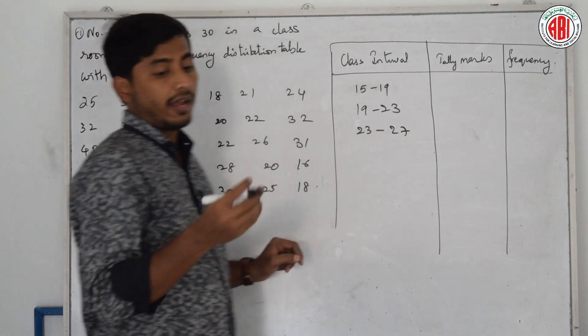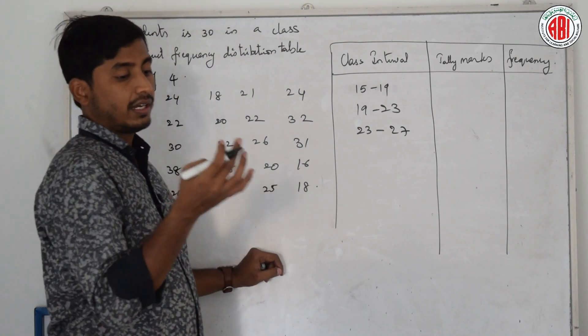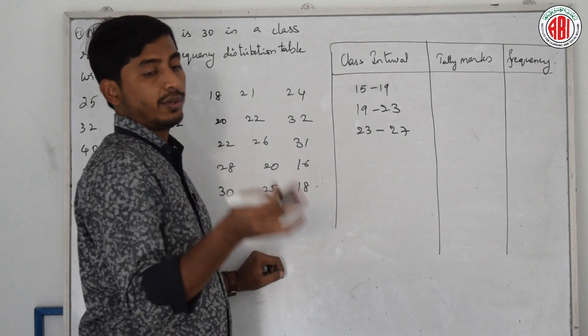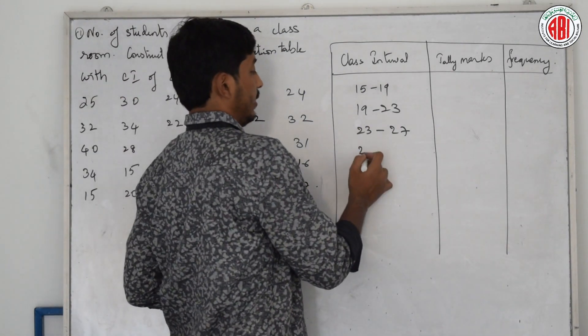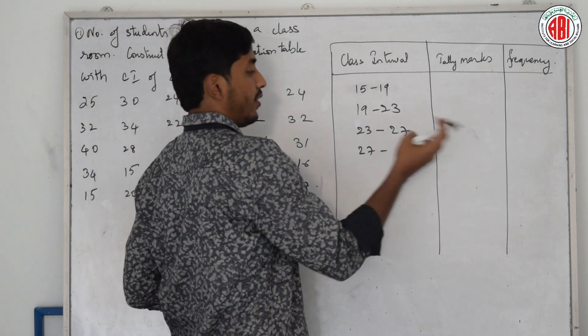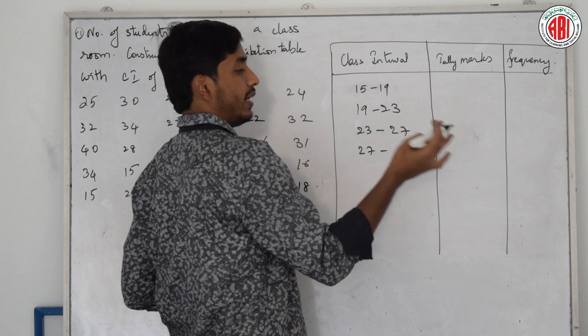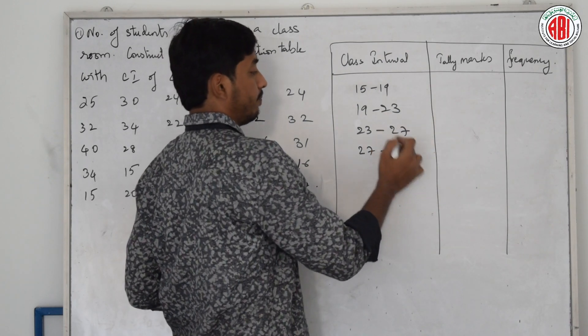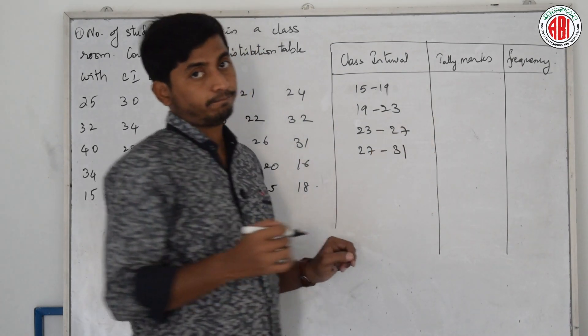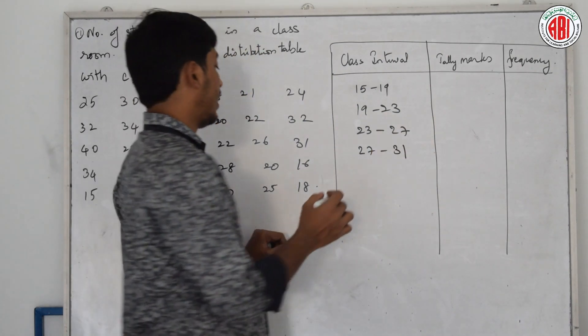After 27, the next interval is 27 to 31. Then 31 to 35, and then 35 to 39. We continue checking whether there are still more numbers remaining in the data.